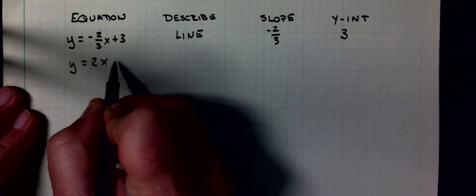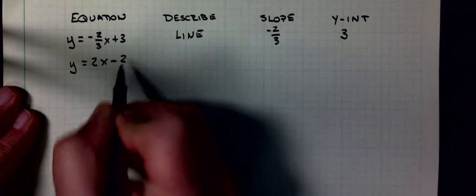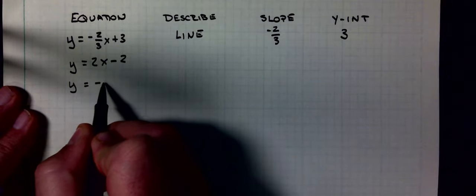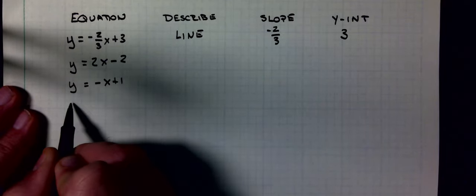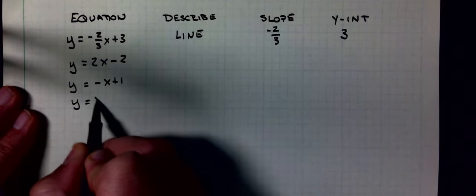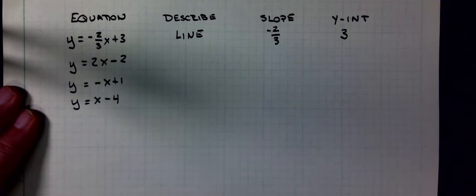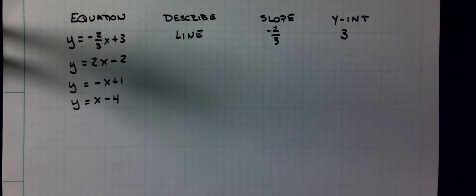I'm going to write down three more equations. Then I'd like you to pause the video after I write down the equations. Try them on your own. Then unpause the video to see what my answers are. Equations I'm going to write: y equals 2x minus 1, y equals negative x plus 1, y equals x minus 4. I'd like you to write those three equations down. Fill out the other three columns. While you have the video paused, and when you're done, unpause it and check your answers.